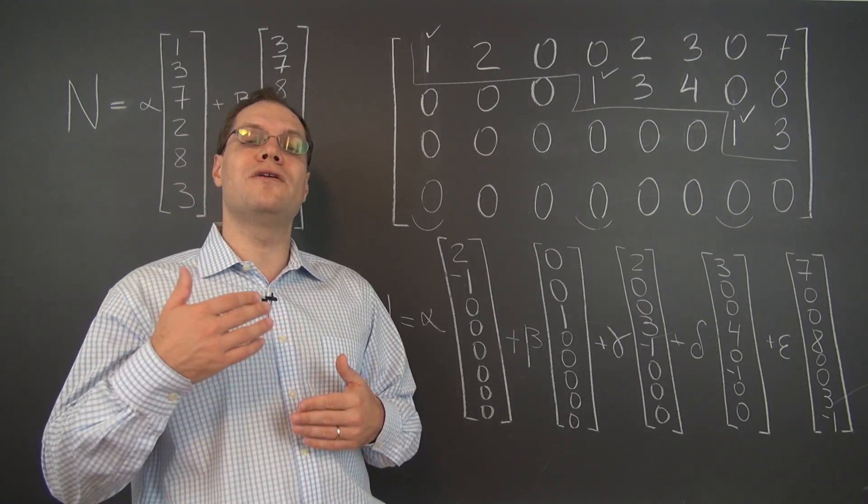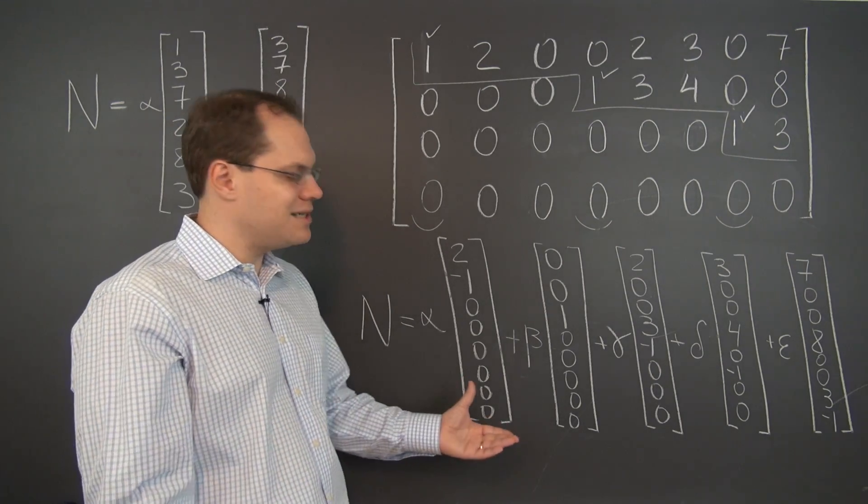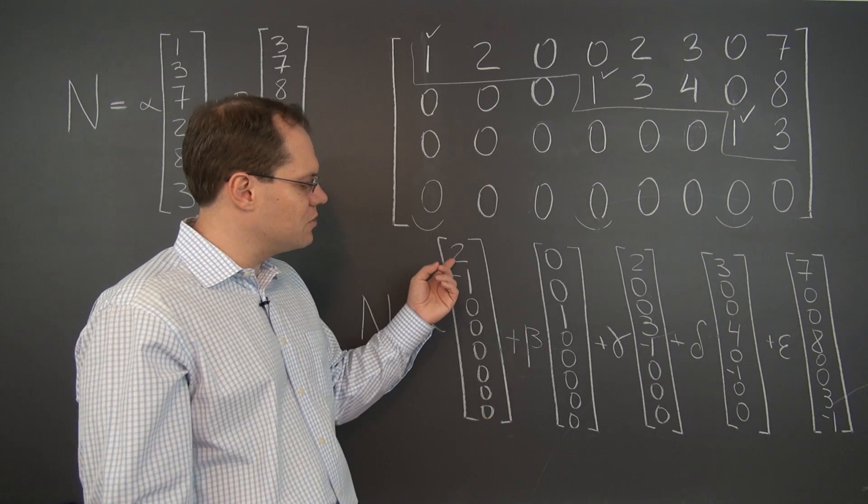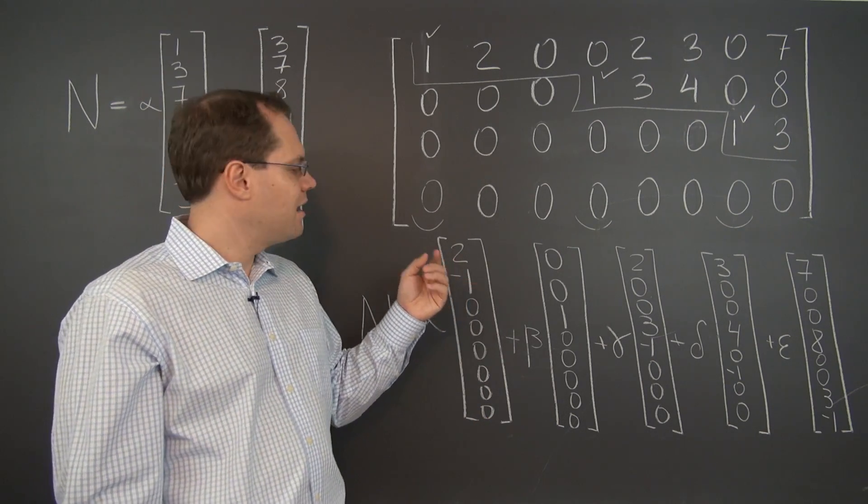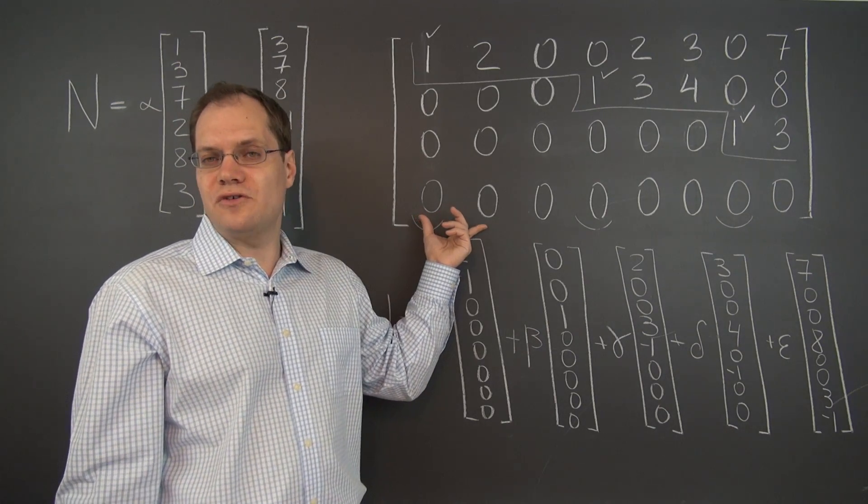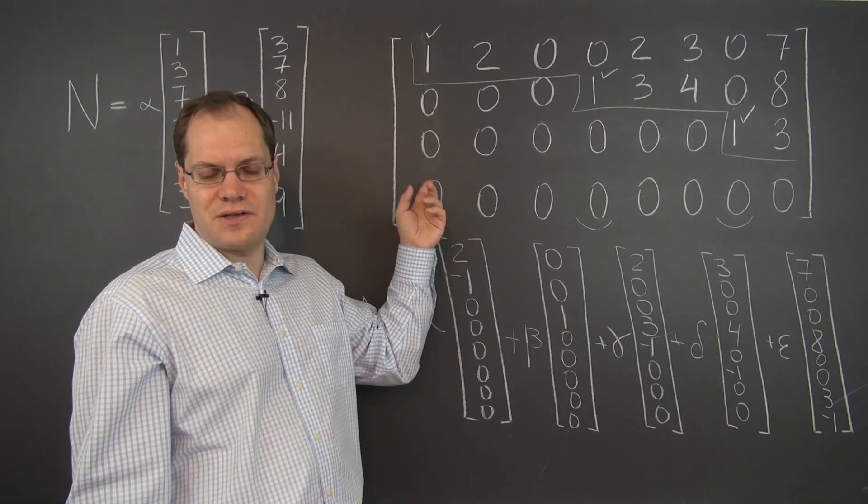All of this information is contained in the null space. All of the relationships, all of the existing relationships among the columns are available in this expression for the null space. So we know that the second column must be twice the first, and that for the row reduced echelon form